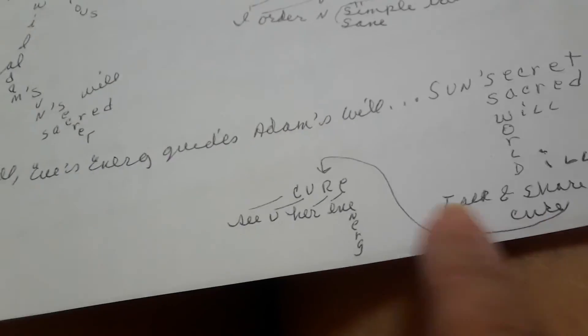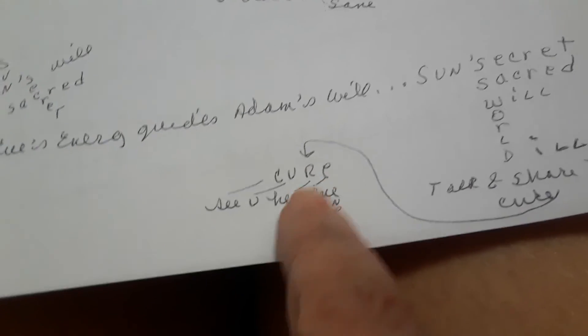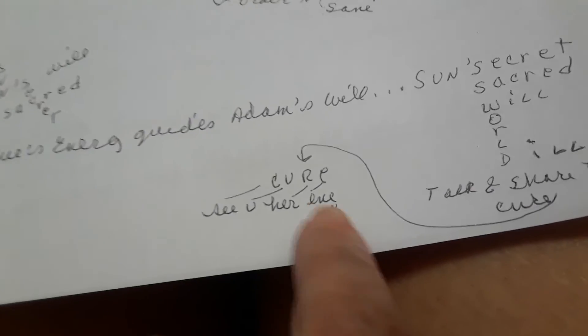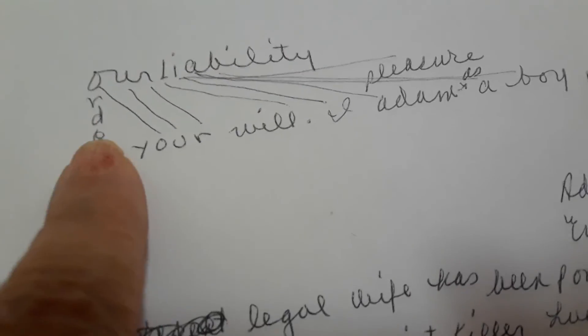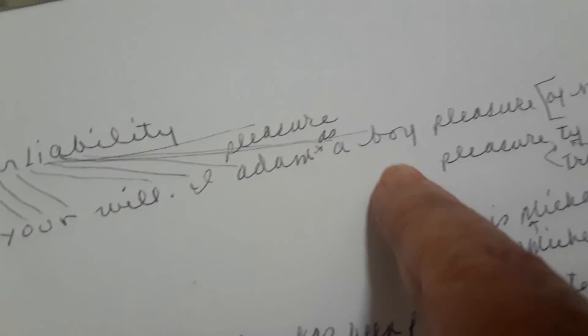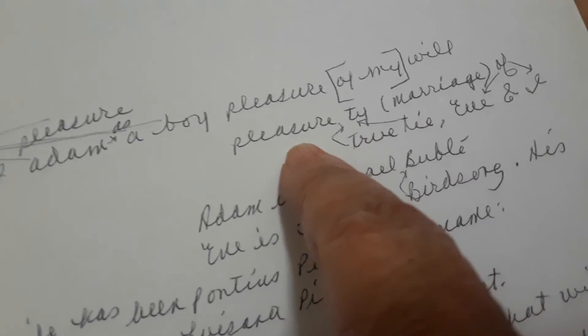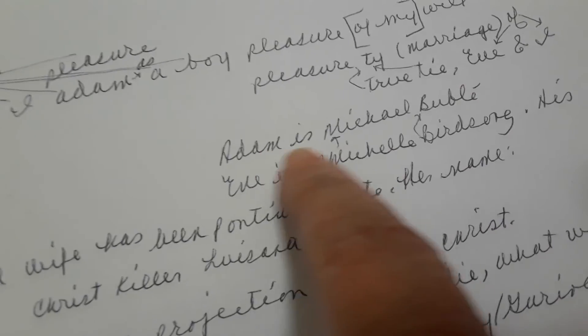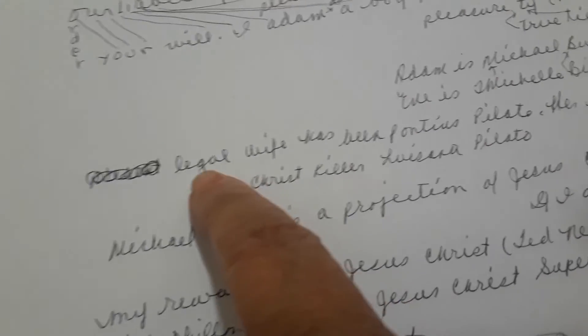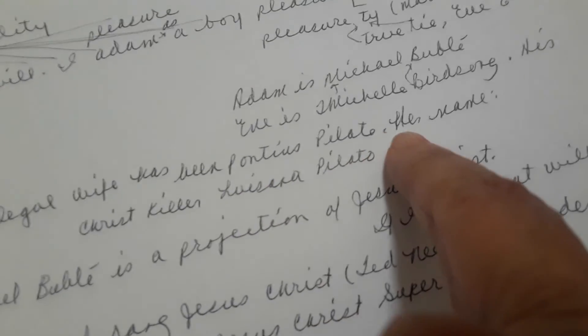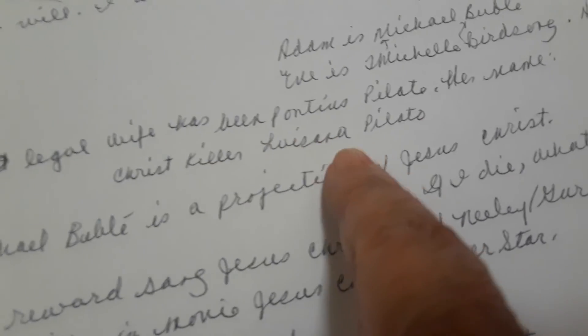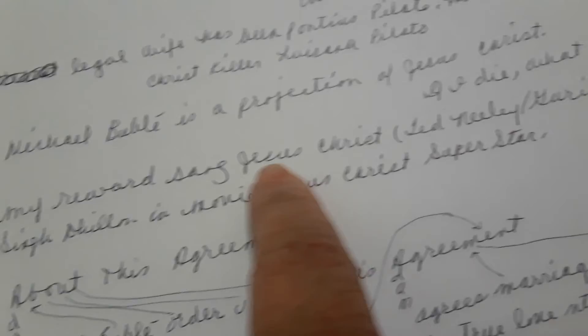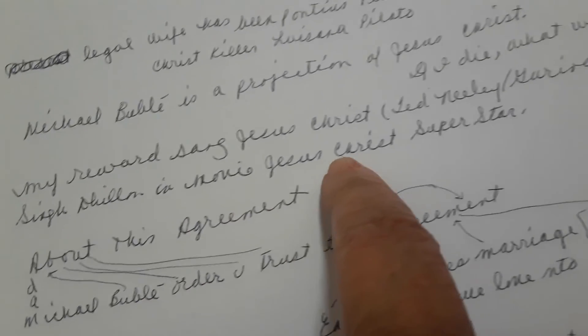Talk and share. Therapy is a cure. Cure, C for see, U for you, R for her, Eve for Eve energy. The cure is see you, her Eve energy. Our liability. Order your will, I pleasure Adam as a boy. Pleasure of my will is the pleasure tie, marriage of Eve and I. Tie. Adam is Michael Buble, Eve is Michelle Birdsong. His legal wife has been Pontius Pilate in a past life. Our name, the Christ killer, is Luzano Pilato, very close to Pilate. Michael Buble is a projection of Jesus Christ. If I die, what will be my reward, sang Jesus Christ, Ted Neely, Gurinder Singh Dylan, in movie Jesus Christ Superstar.